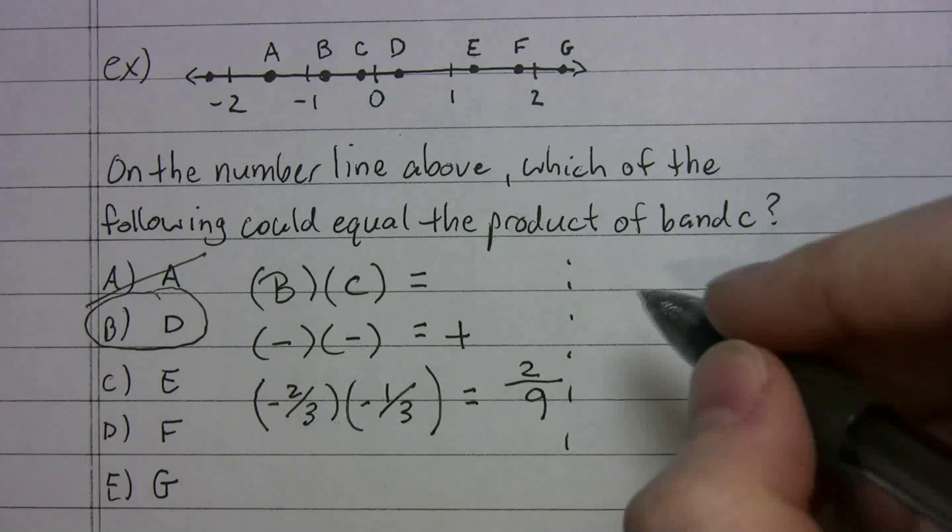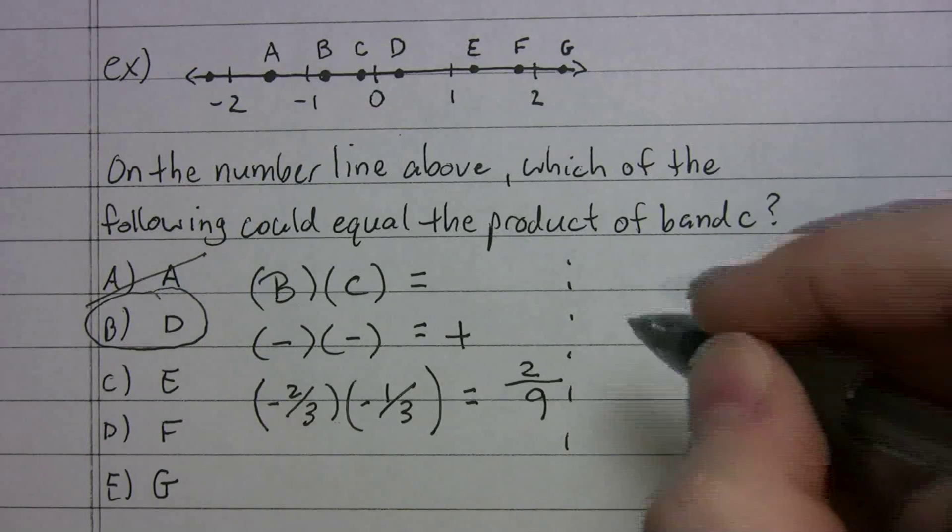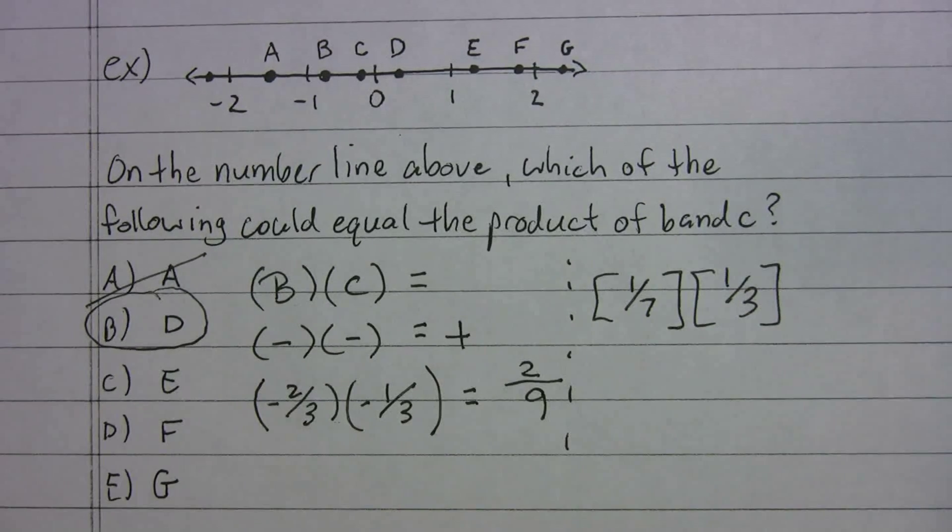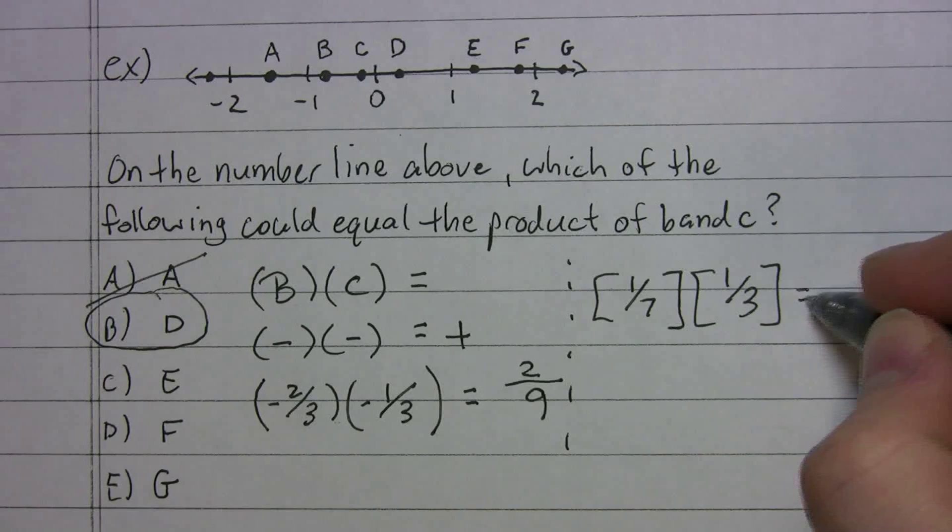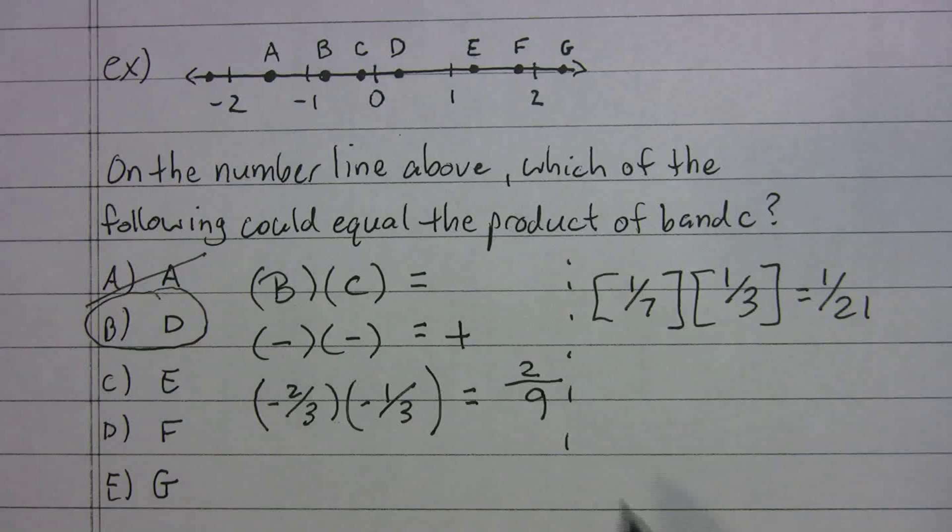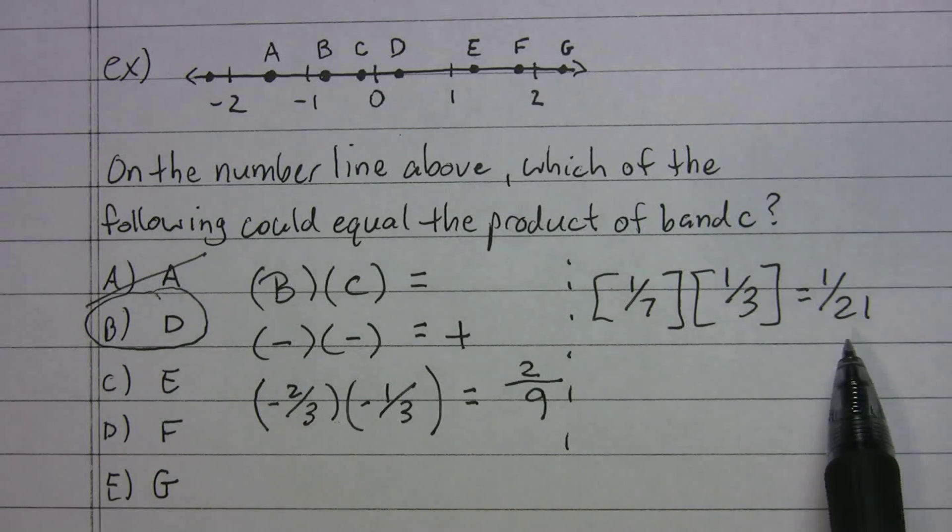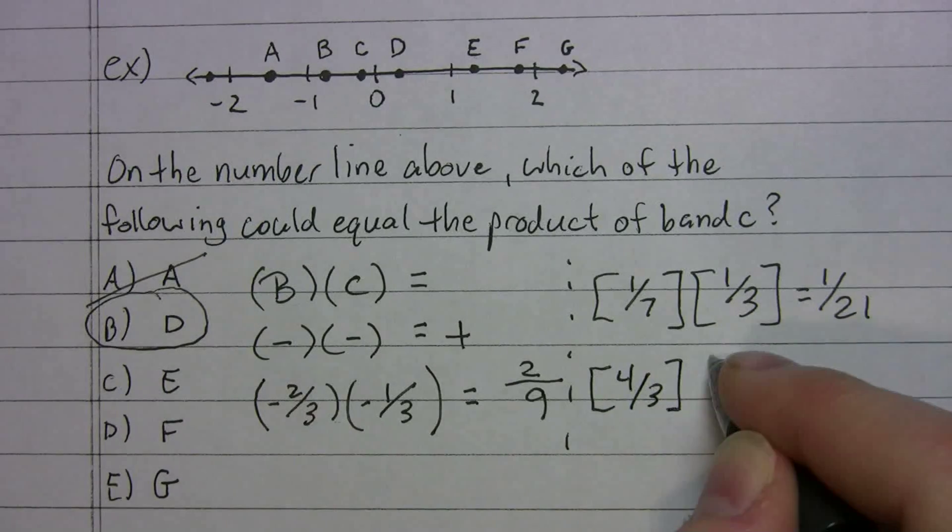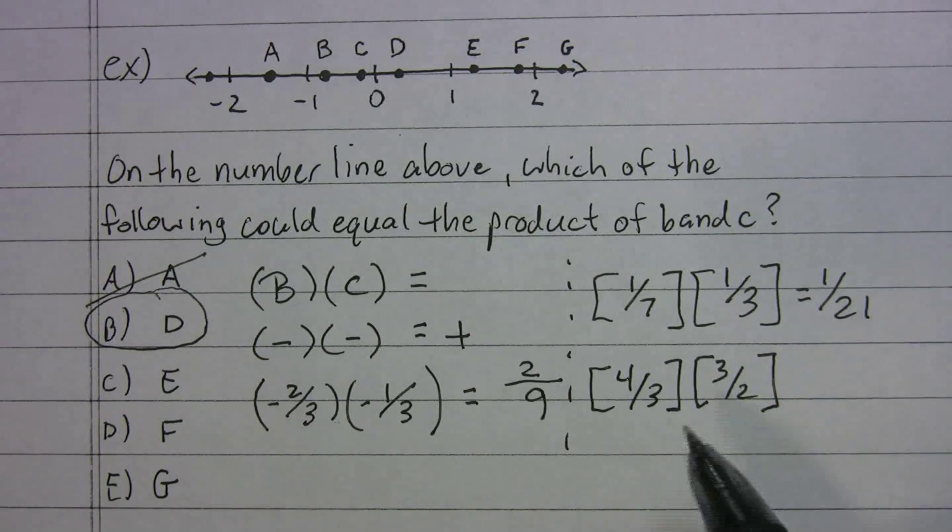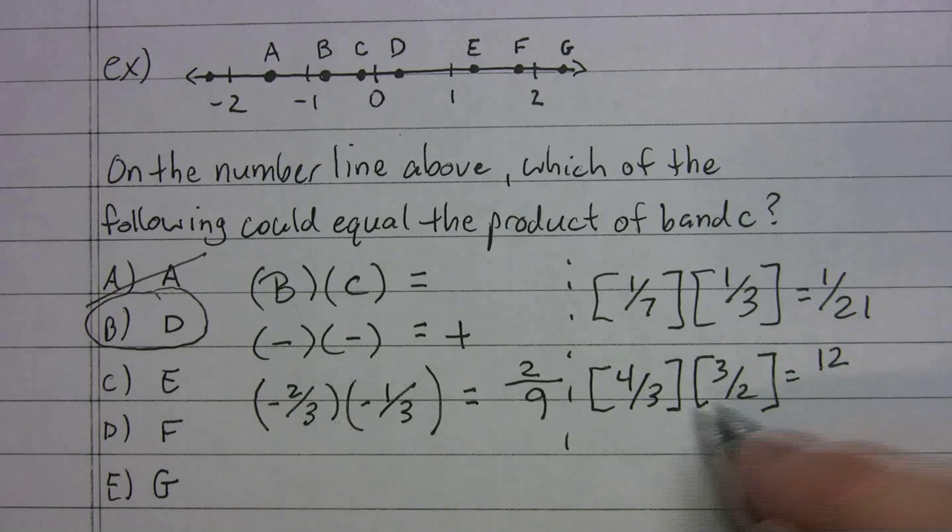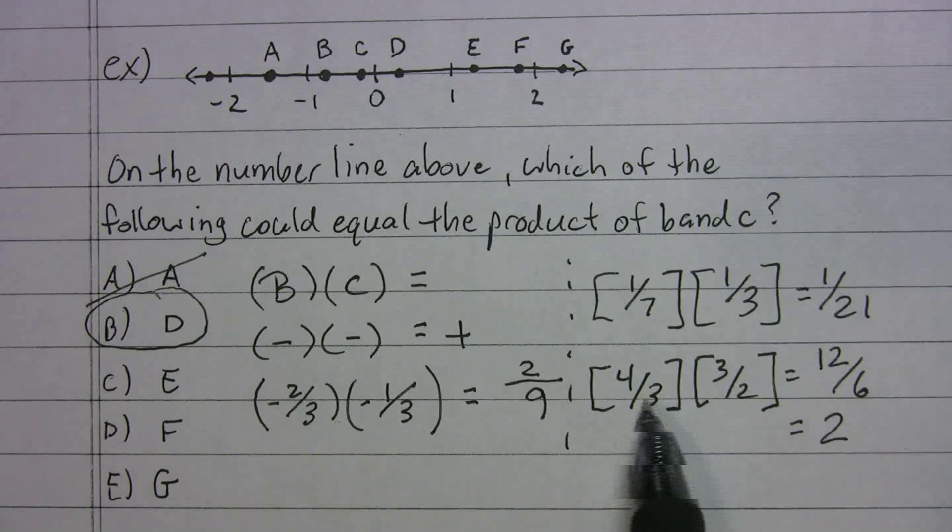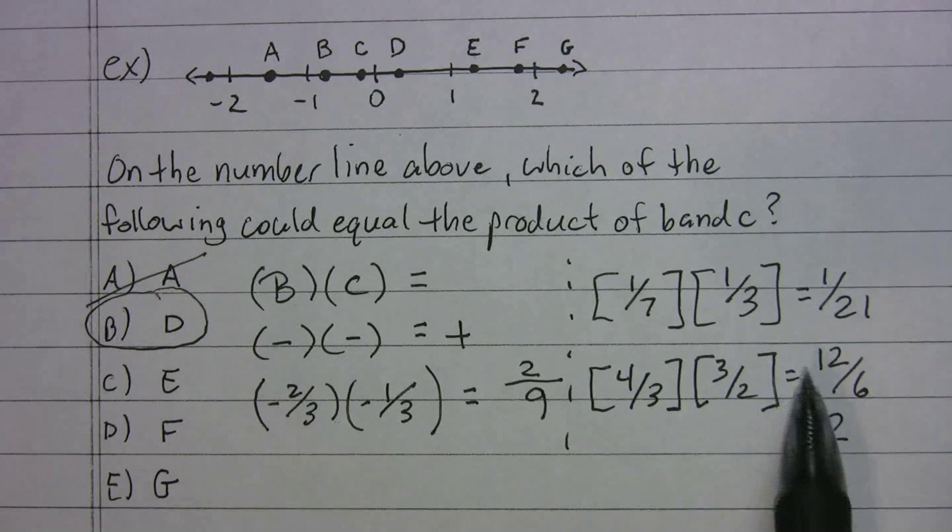For example, one seventh times one third. Is it going to be greater than one or less than one? Well, a seventh times a third is one over twenty-one. So you should know when you multiply fractions less than one, you get a smaller fraction. What happens when you have fractions bigger than one? Four thirds times three halves. Again, we're going to multiply the tops. That's 12. The bottoms, 6. And 12 over 6 is the same thing as 2. So when you have fractions greater than one, you get a number bigger than one. And that's kind of the lesson behind that.